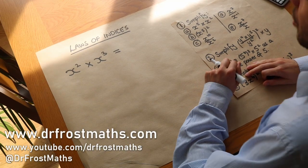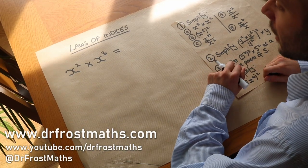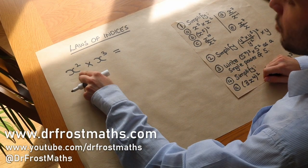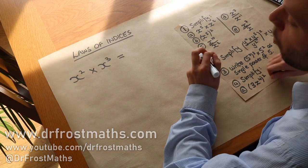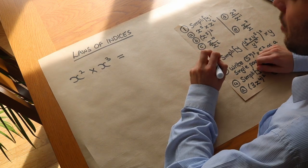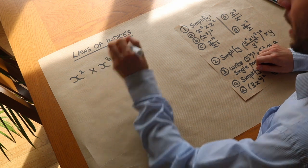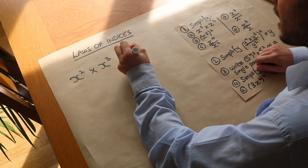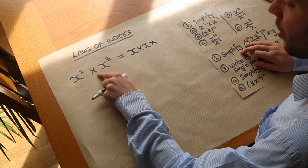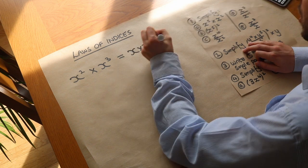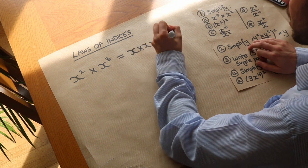Hello and welcome to this video on laws of indices. Let's suppose we had x squared times x cubed and we wanted to simplify that. Well let's consider what these things mean. x squared means x times x, and you're multiplying by x cubed which means x times x times x.